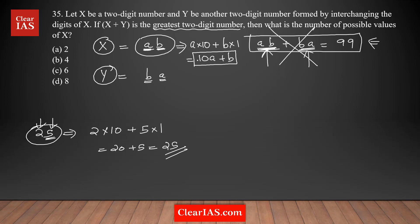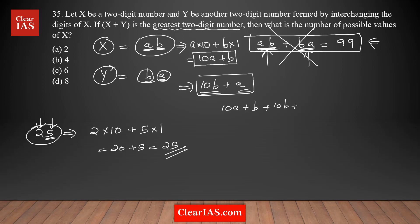Similarly, y can be denoted as 10b + a, since you are reversing the digits — b is the tens digit and a is the units digit. Now you can easily form the equation: 10a + b + 10b + a = 99. Adding the like terms: 11a + 11b = 99. You can see 11 is common, so cancelling it throughout gives a + b = 9. This is the key condition — the sum of digits a and b must equal 9.